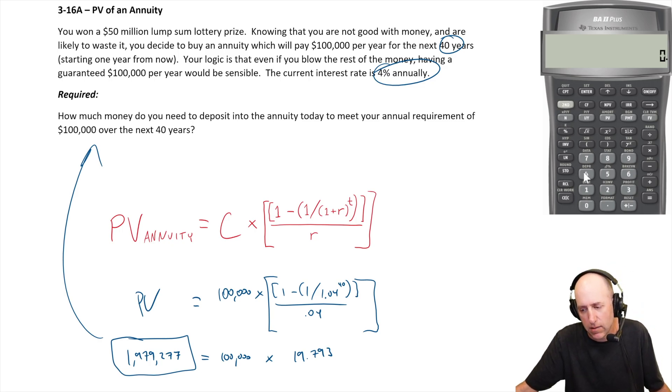I'll start with the N, it's 40 years, so 40 goes in as my N. My IY is 4, 4% annual interest, so I put 4 in as my IY. My PV is what we are solving for.